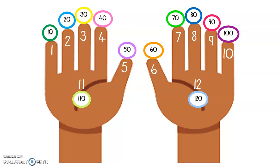So if you are stuck and you need to work out what, for example, 3 times 10 is, you can quickly put three fingers in the air and count in tens: 10, 20, 30. How easy was that?